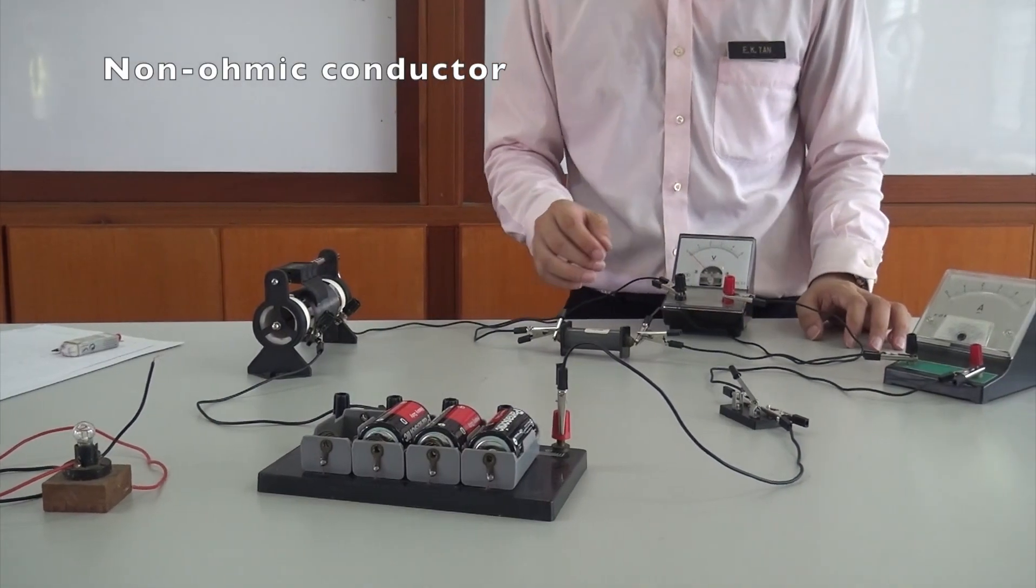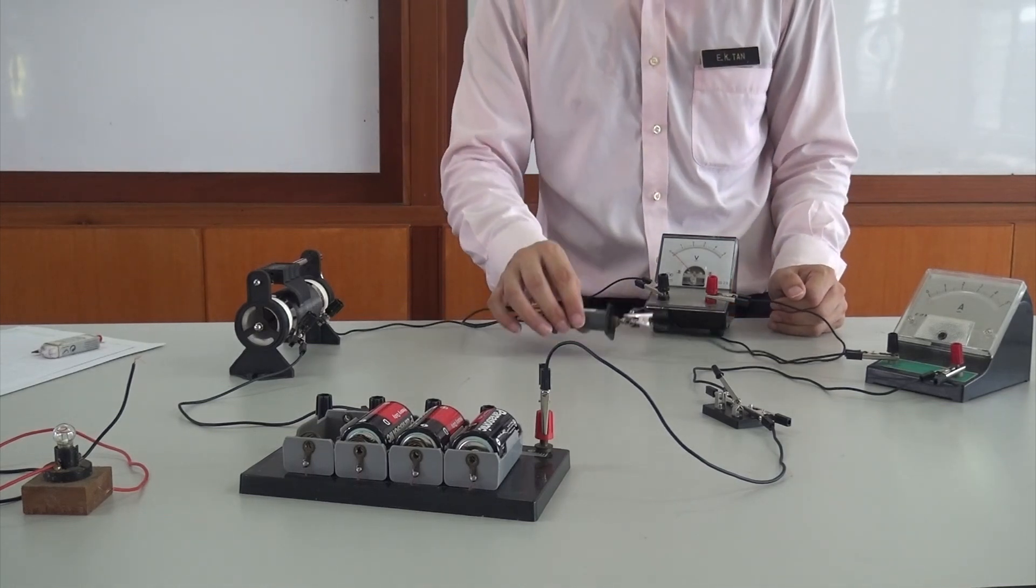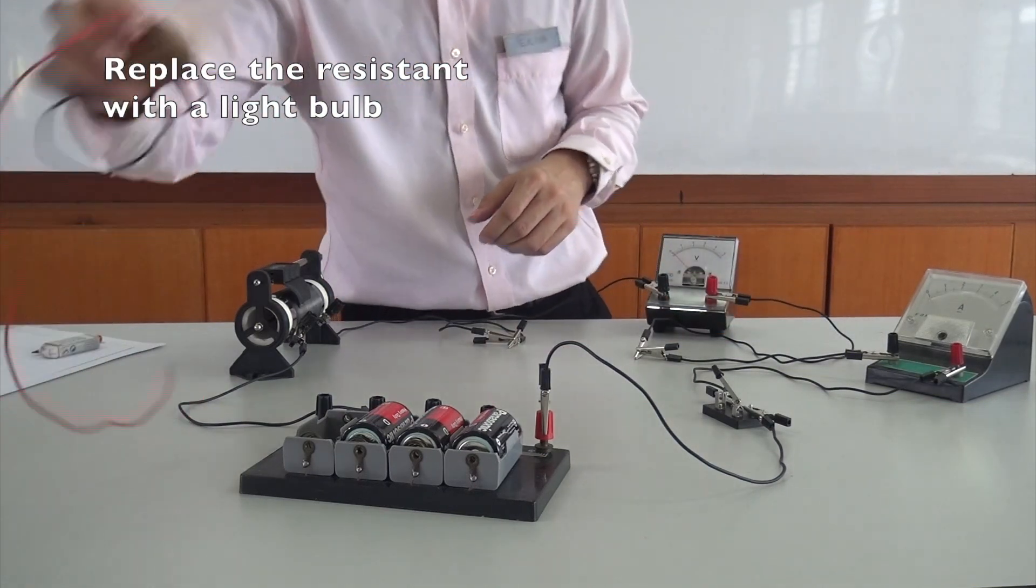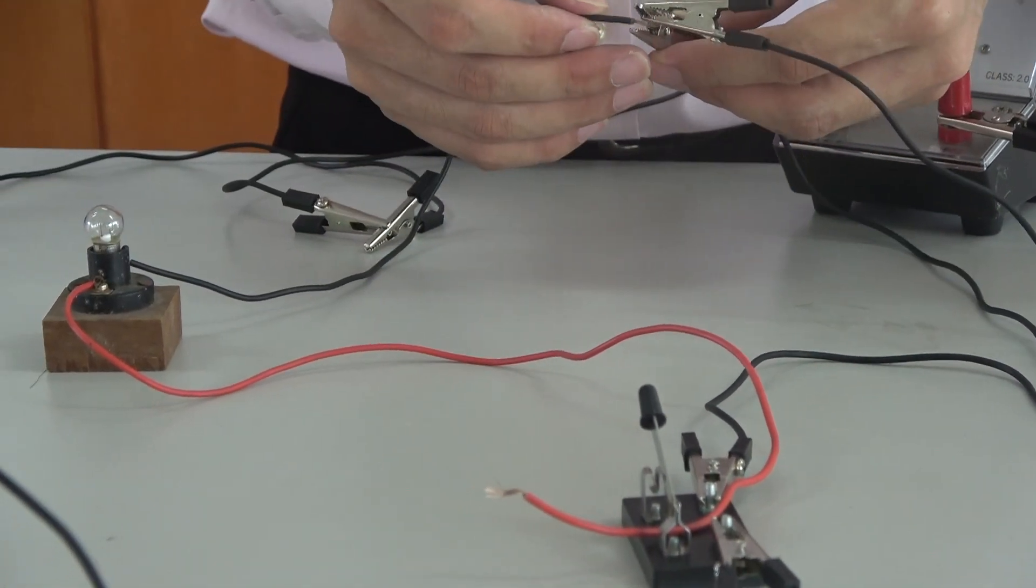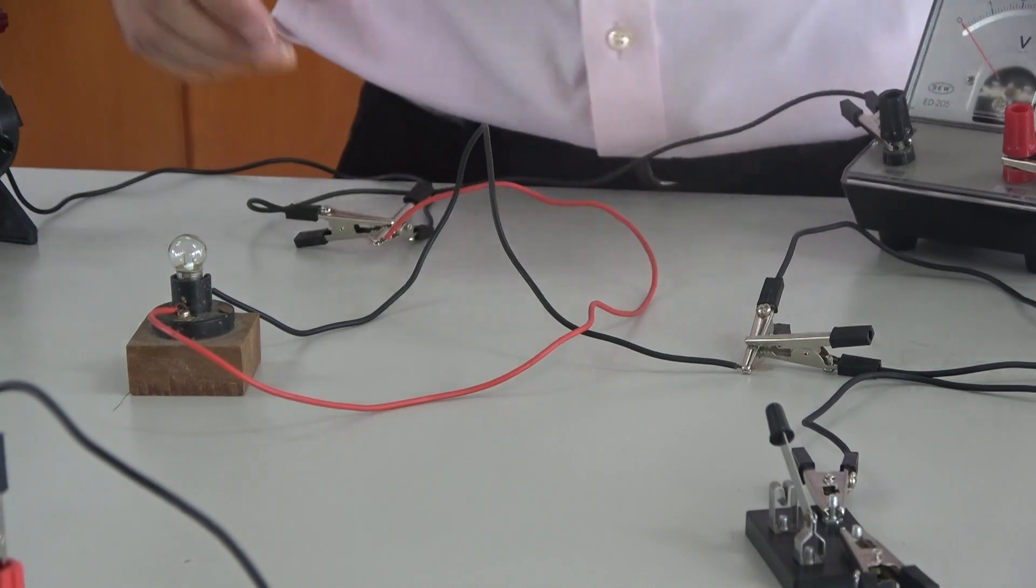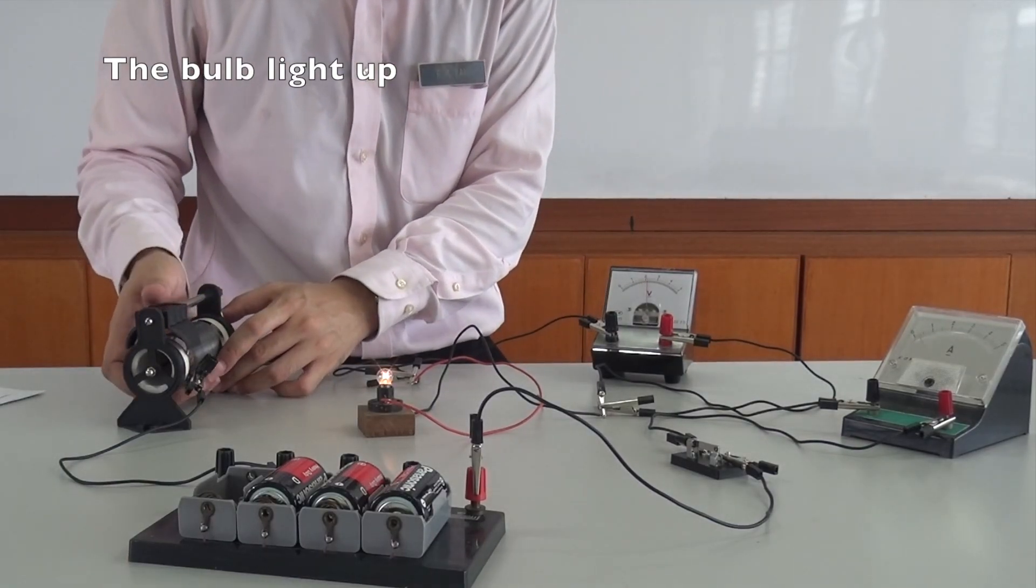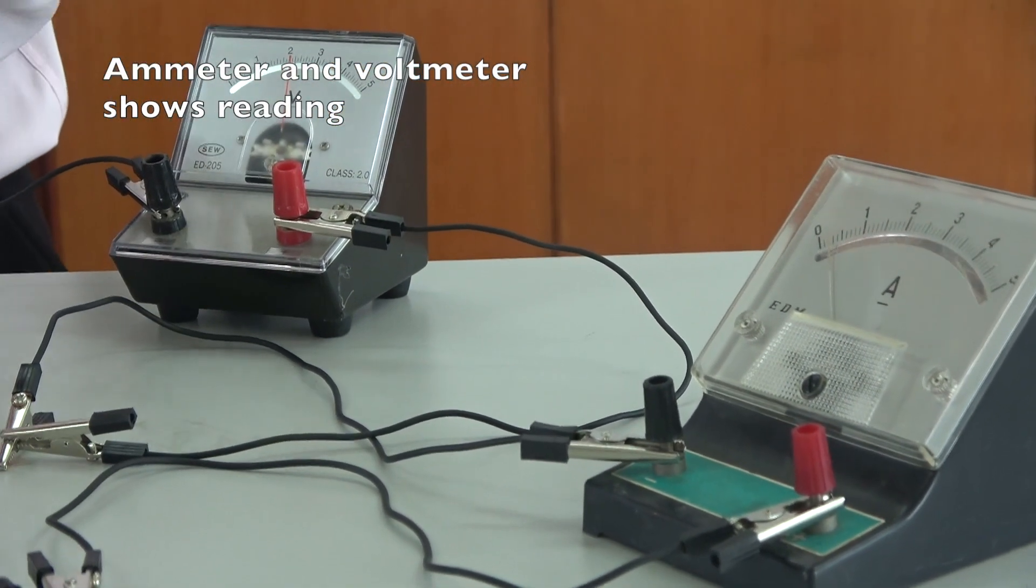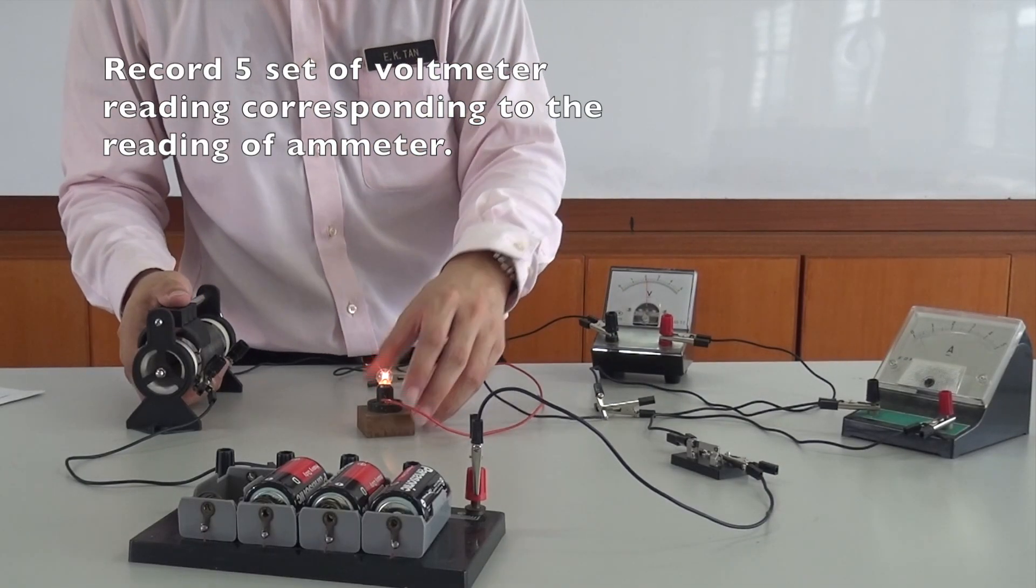Then, we can start to take the readings for the non-ohmic conductor. We don't have to disconnect all the wiring because the only thing we change is replacing the ohmic conductor with the non-ohmic conductor. I will just take down the wire over here and replace with the light bulb. The same thing, I will switch on the switch and check if the bulb can be lighted up or not. It's working. Voltmeter is showing some reading and ammeter is showing a reading. Then, we can start to take another 5 sets of readings for the non-ohmic conductor.